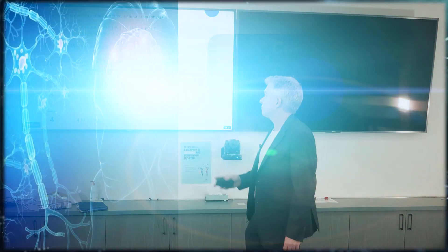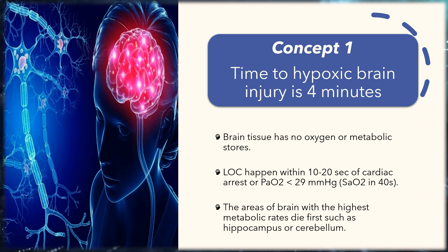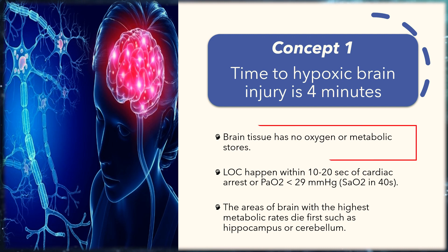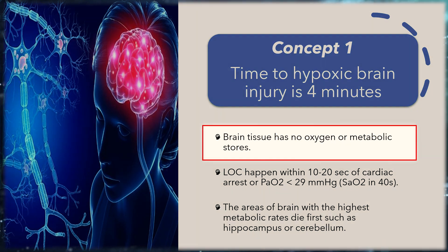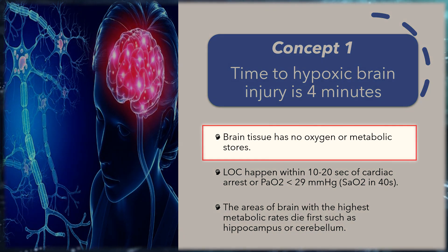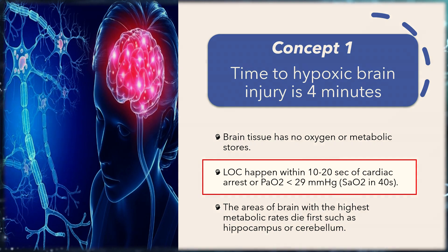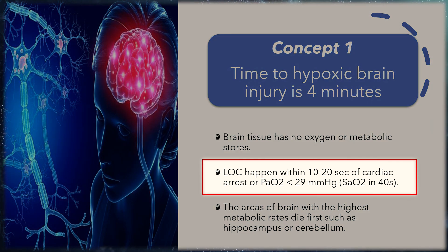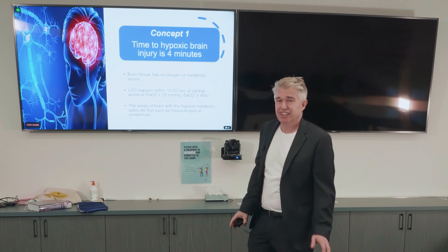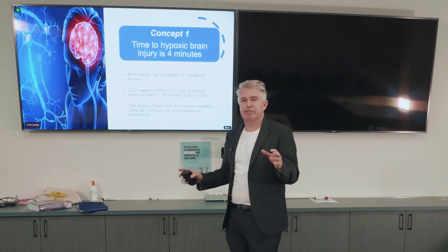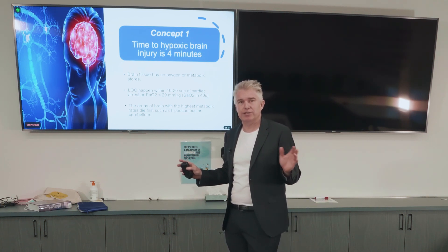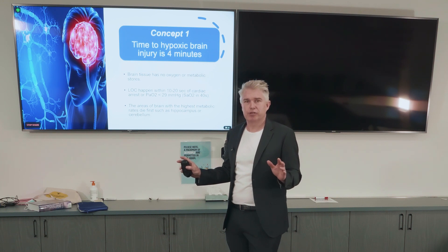Okay, let's get on to the first concept. Concept one: the time to hypoxic brain injury is four minutes. Brain tissue has no oxygen or metabolic stores. Loss of consciousness happens in hypoxic arrest when the PO2 is less than 29, which corresponds to roughly oxygen saturations in the 40s. So if your sats are in the 40s, the brain is going to start to die within four minutes.